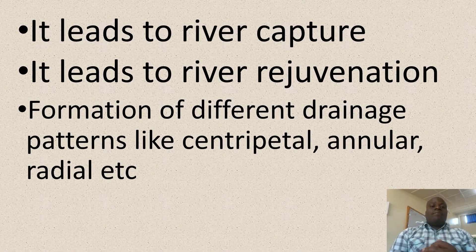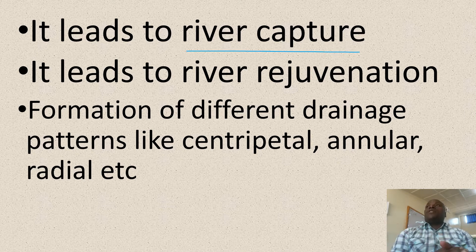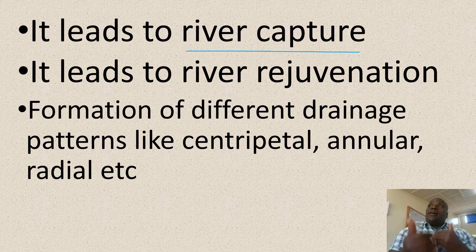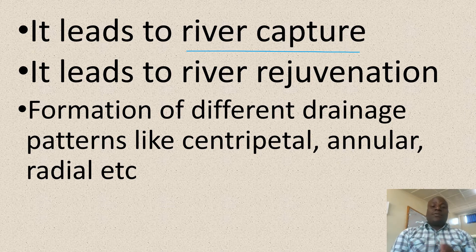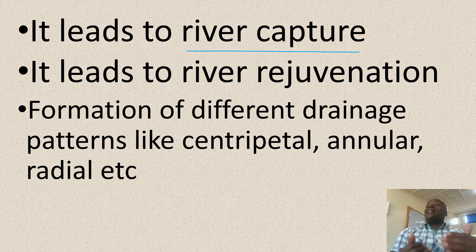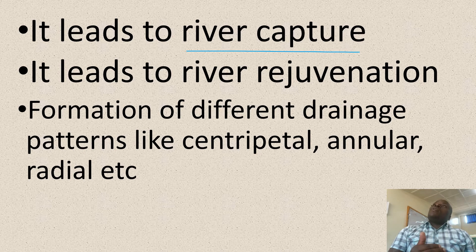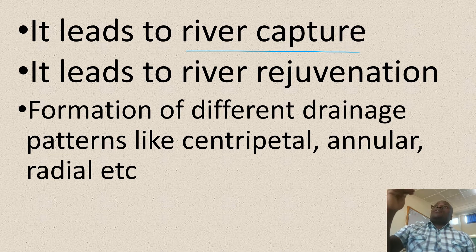Next, warping leads to river capture. This is when a powerful river diverts the water of a weak river. For this to happen, there must be two rivers flowing adjacent to each other, and one must be flowing at a lower level or altitude than the other. The river which flows in a down-warped region is likely to capture the river flowing on the upper level neighboring it.